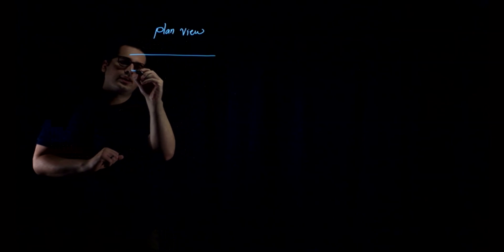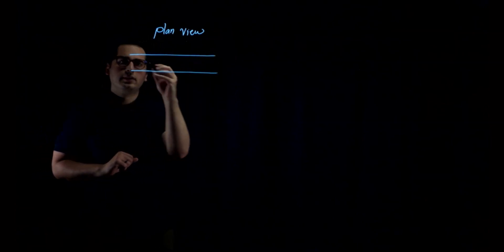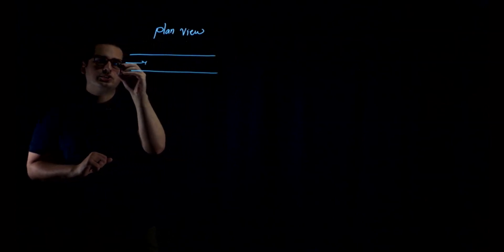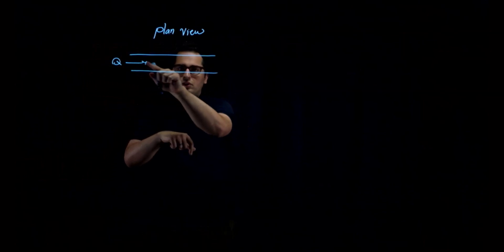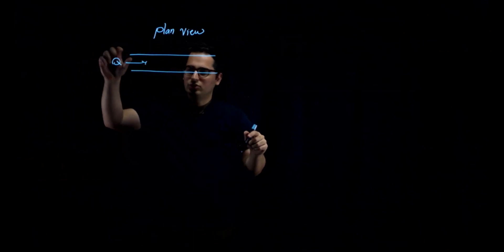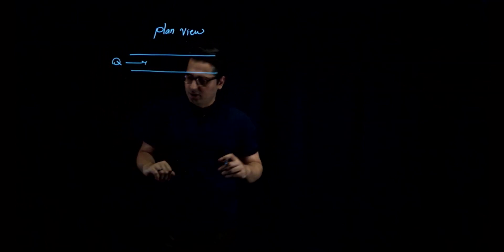First of all, I'm going to show you the plan view. This is the open channel that I have, and I'm looking at it from above. And the flow is in this direction, and this is Q. There is no weir over here, so the flow is, the discharge, the water is flowing freely in this open channel.